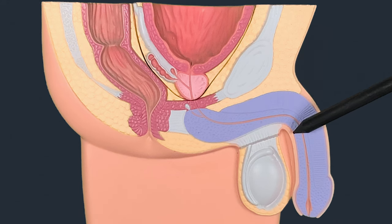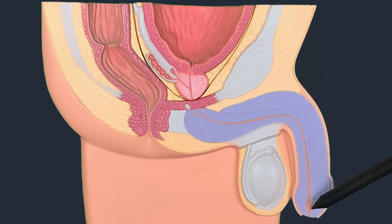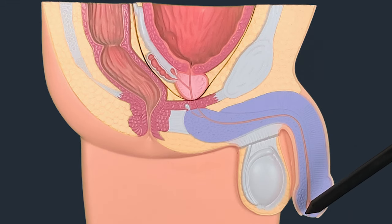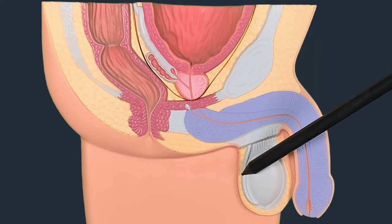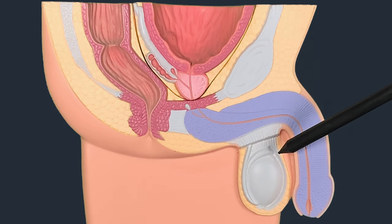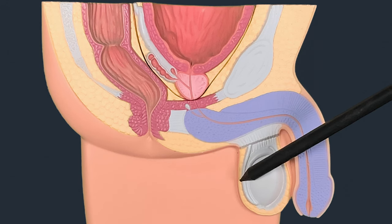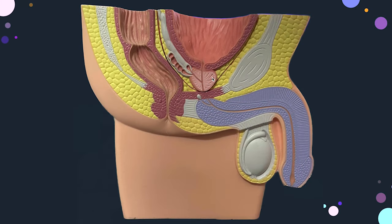The penile urethra is the longest part of the male urethra. Near its end there is an ovoid structure called the navicular fossa, and at the extreme end is the external urethral meatus. Hanging down we can see the testes, the beginning of the vas deferens, and the epididymis.